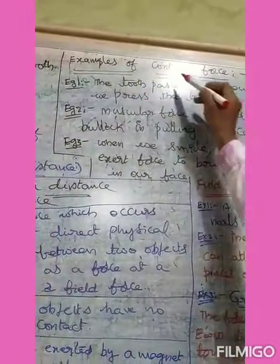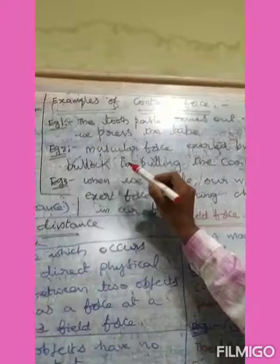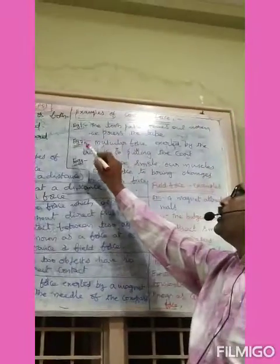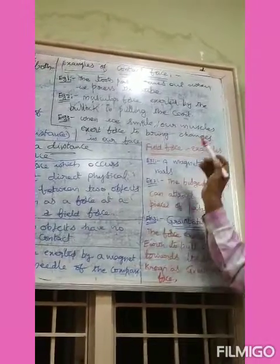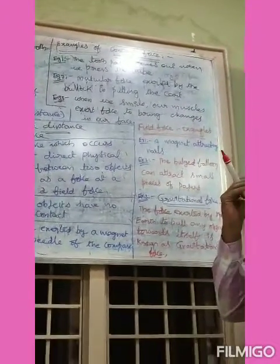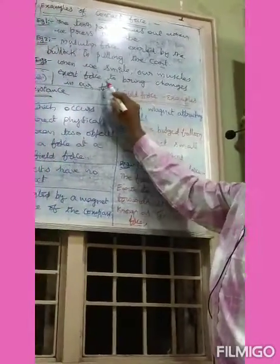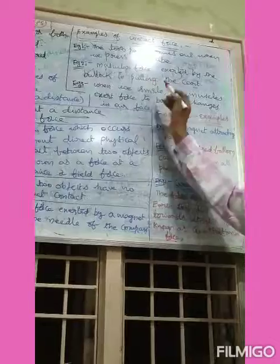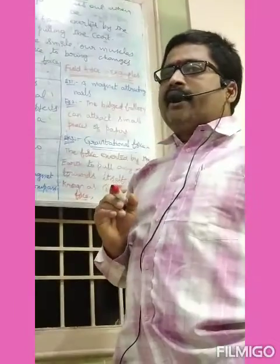Examples for contact force: the toothpaste comes out when we press the tube. Muscular force exerted by the bullock in pulling the cart. When we smile, our muscles in our face exert force to bring changes in our face. These are the examples for contact force — a force which results when there is a direct physical contact between two interacting objects.